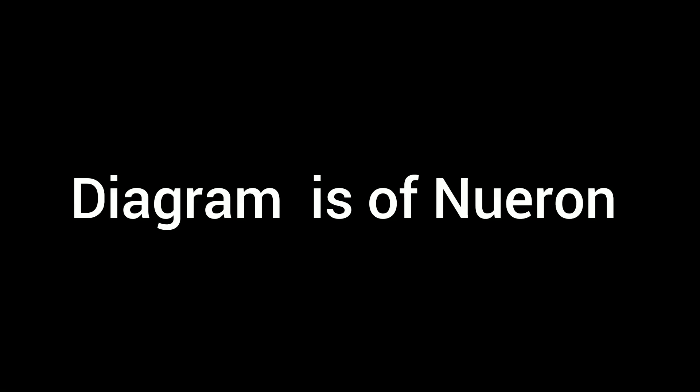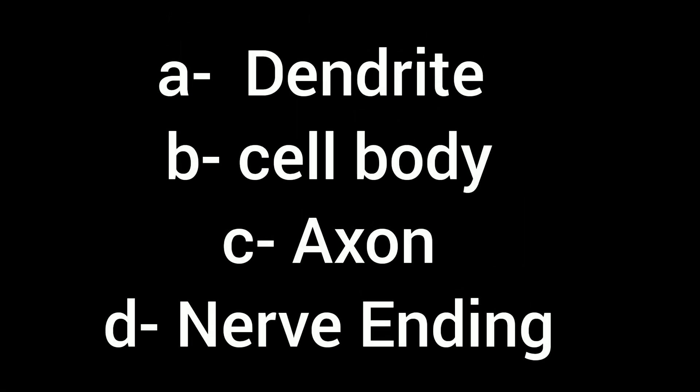Yes, it is the diagram of a neuron. Part A is dendrite. B is cell body. C is axon. And D is nerve ending.